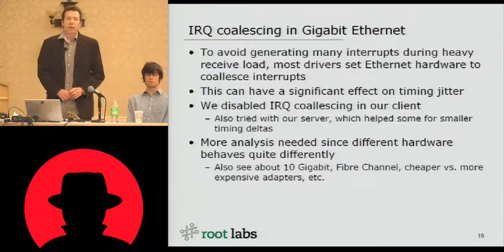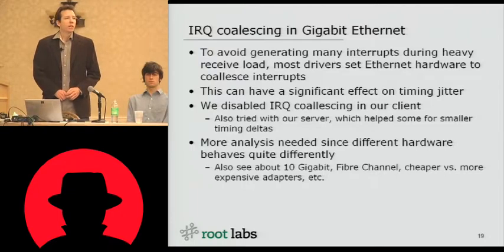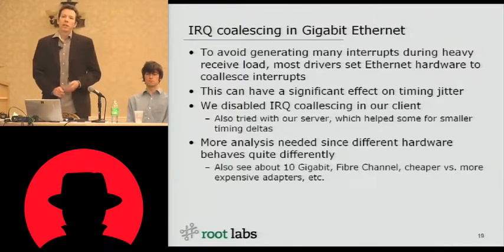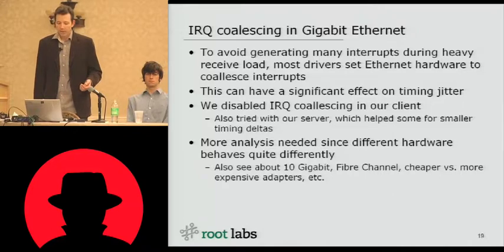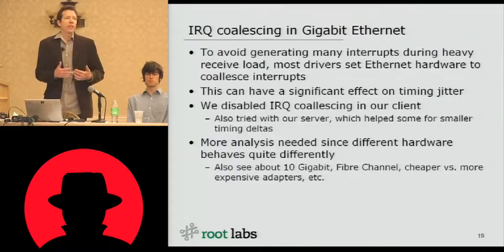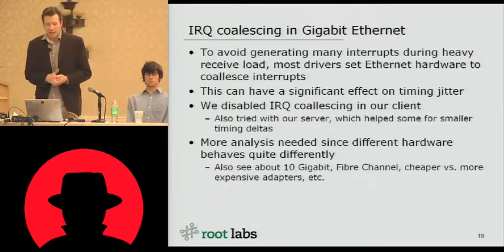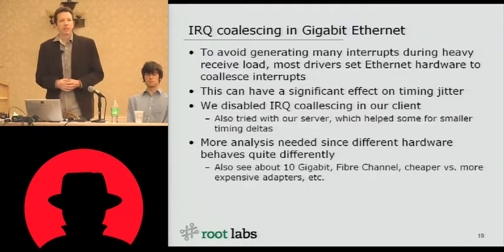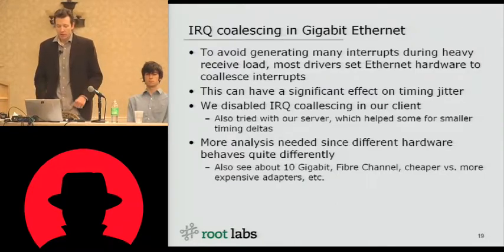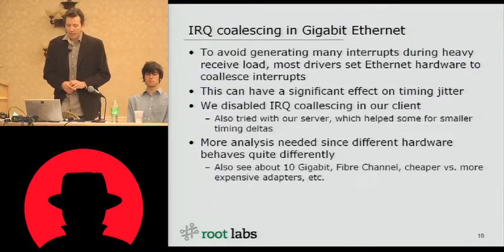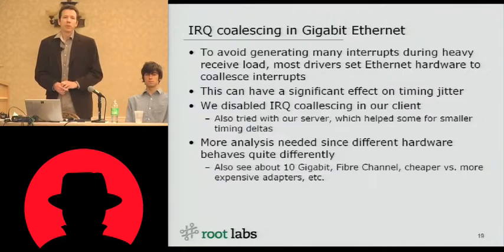Some other factors we looked into: IRQ coalescing. If you have modern gigabit hardware or faster, you usually have this feature enabled in your drivers. What this does is basically, when your server is under heavy receive load, you don't want to generate an interrupt for every packet you receive — that'll overwhelm your server. So most drivers set up the ethernet hardware to implement a state machine that says, if I haven't received another packet in a certain amount of time, go ahead and generate an interrupt; otherwise wait a few hundred microseconds for another packet and then deliver it. This can add a significant amount of jitter. We disabled IRQ coalescing on our client and also tried with and without it on our server. This did help for some of the smaller timing variations, but didn't make much difference for the larger values.